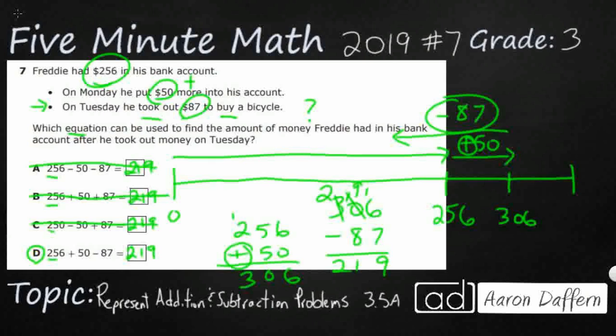We did that by drawing this extended number line. We could also have just drawn a picture. Or like I said, if you are just really stuck and you think you know the answer, just go ahead and do the math, figure out what all of these equals. And only one of them, D, is going to equal 219. That's our answer.